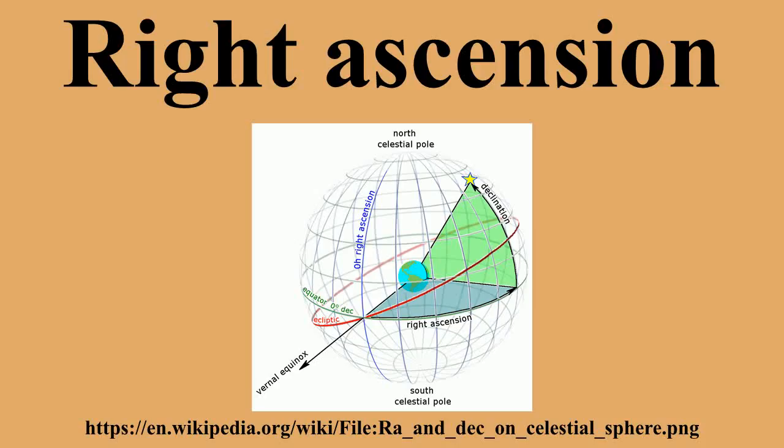Equatorial mounts could then be accurately pointed at objects with known right ascension and declination by the use of setting circles. The first star catalogs to use right ascension and declination was John Flamsteed's Historia Coelestis Britannica.